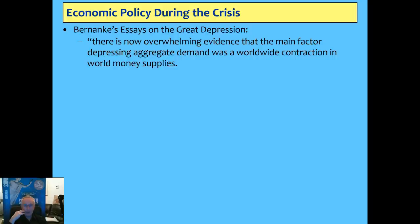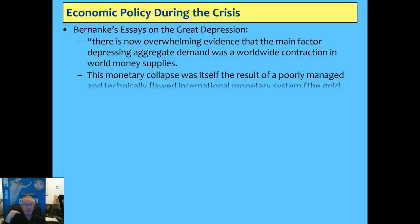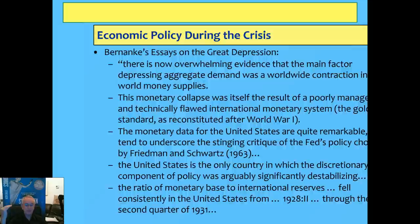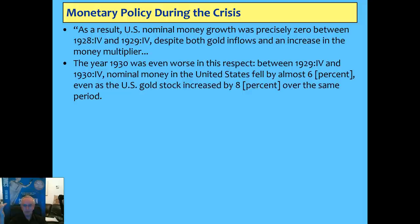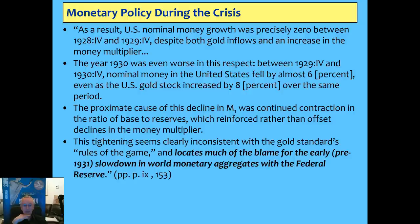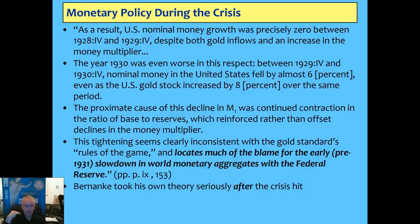If you look at Bernanke's essays on the Great Depression, he blamed it on a contraction of money and world money supplies, which he blamed on the authorities — in particular the Federal Reserve. He said the only country where discretionary aspects of policy were destabilizing was where the ratio of the monetary base to international reserves fell, and nominal money growth was zero between 1929 Q4 and 1930 Q4. He blamed the Federal Reserve, saying the cause was a contraction of the ratio of base to reserves, which reinforced rather than offset declines of the money multiplier.